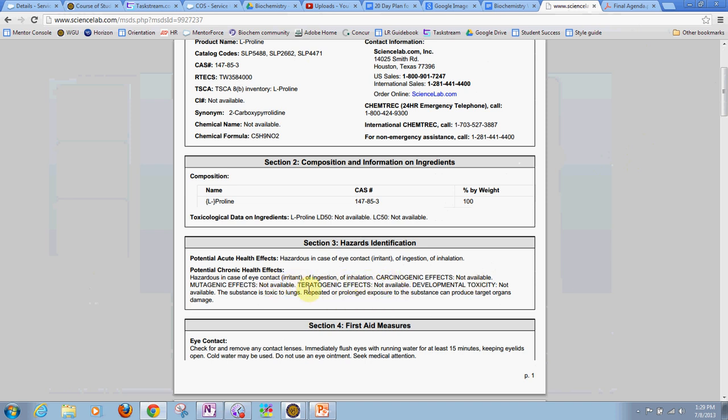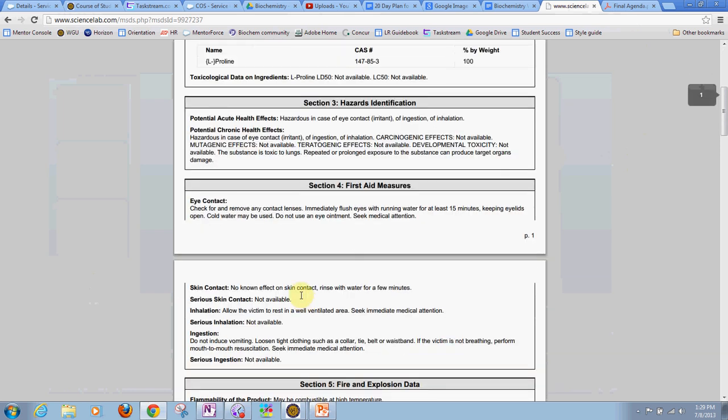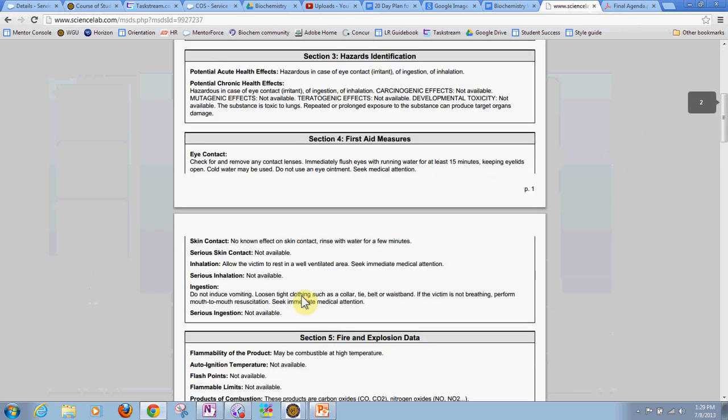Teratogens are those things that can cause birth defects, just for those who may not know that. It does not seem to have any developmental toxicity. So we've learned a little bit there, and we can continue to go down and learn some more things.